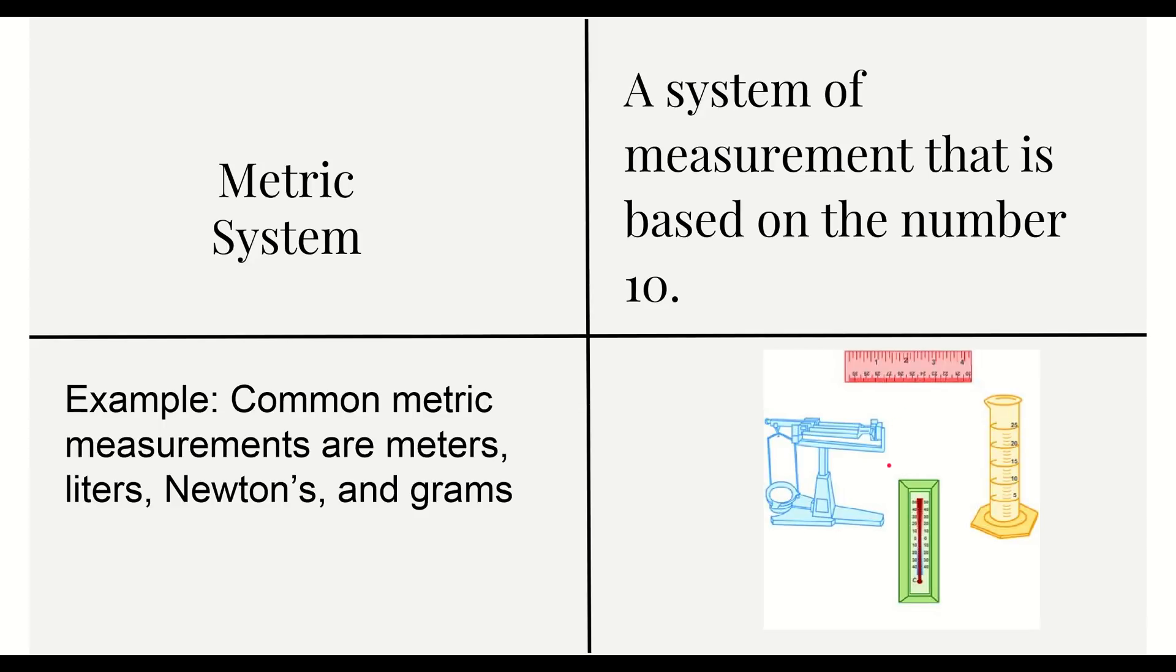If we look over to our picture here on the right we have a thermometer for temperature in celsius, a graduated cylinder which is what we use to measure volume, a metric ruler with centimeters on the bottom, and a balance which is how we measure our mass.